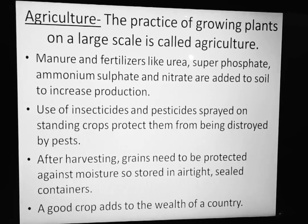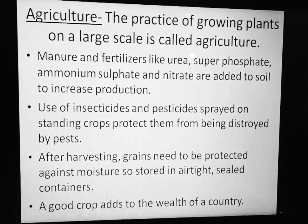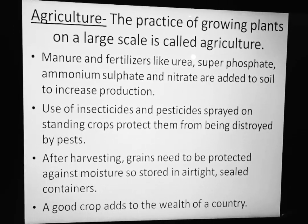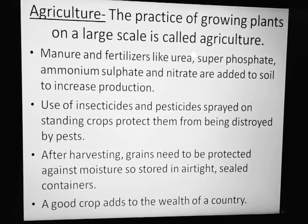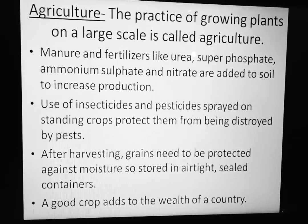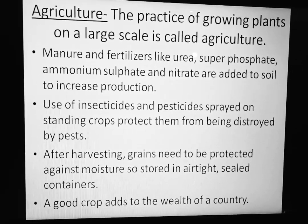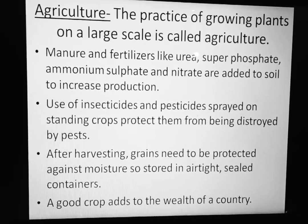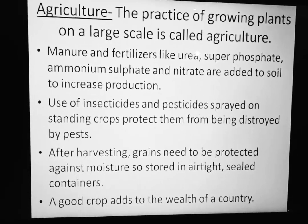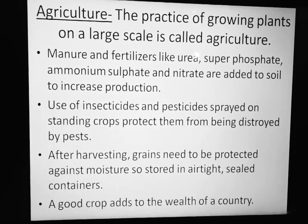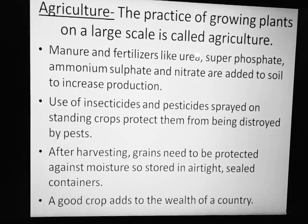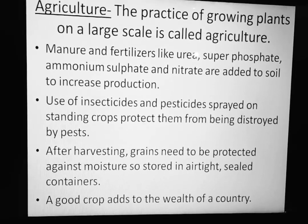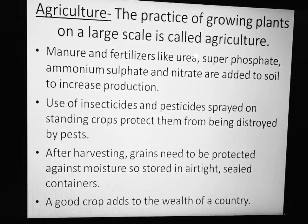The practice of growing plants on a large scale is called agriculture. Manure and fertilizers like urea, super phosphate, ammonium sulphate, and nitrate are added to the soil to increase the production of crops. Use of insecticides and pesticides sprayed on the standing crops protects them from being destroyed by pests.